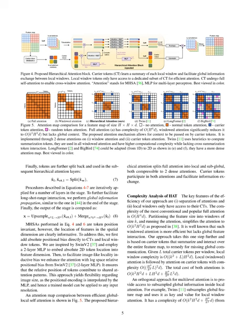Let's delve into the complexity analysis of our method, which we'll call HAT. The efficiency of our approach relies heavily on two main features: the separation of attentions, and restricting local windows to their own carrier tokens. In general, the complexity of traditional full attention models is proportional to the fourth power of the height of the feature map H, times the dimension of the feature vectors D. If we divide the feature map into windows of a certain size K and apply the attention mechanism, the complexity is simplified to be proportional to the square of the window size times the square of the feature map height times D.